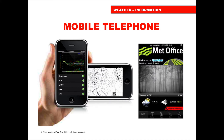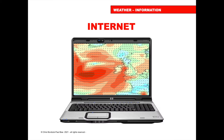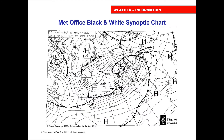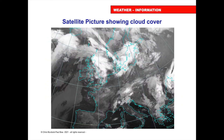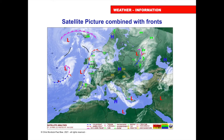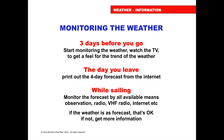Mobile phones are a great way to get forecasts via the internet, and we'll discuss that more shortly. The Met Office will give synoptic charts — black and white versions use less data to download but still give the information needed. What I like about a synoptic chart over a pictorial forecast is it tells you what's happening across the whole area. You can also get colour synoptic charts, satellite pictures showing cloud cover, and satellite images combined with fronts — so you can see both the fronts and clouds together.